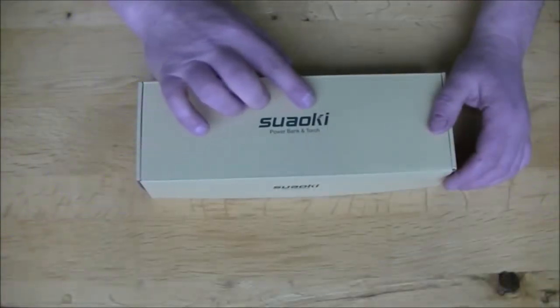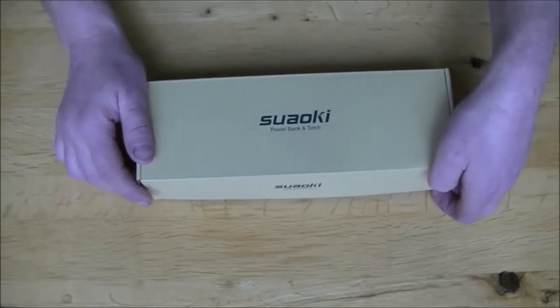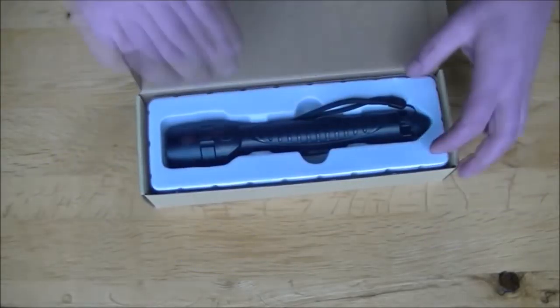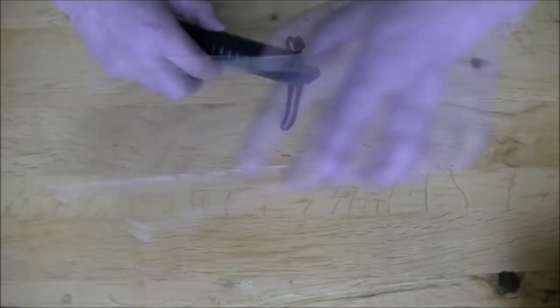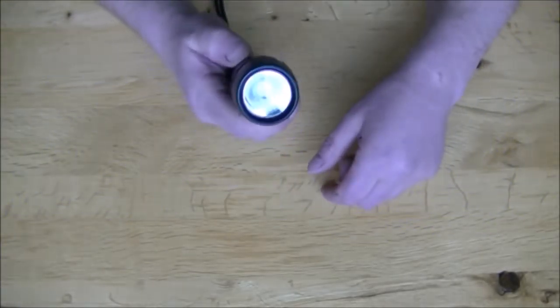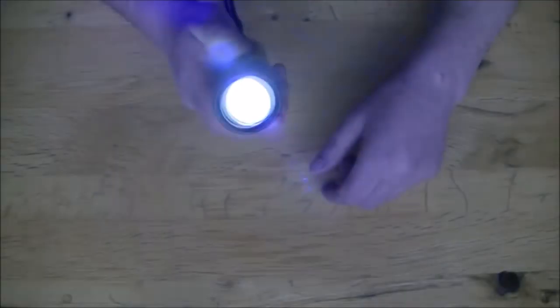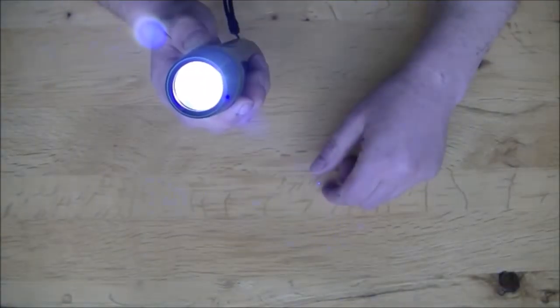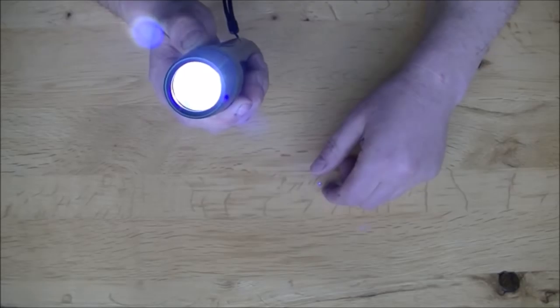Okay, here we go. Swaoki power bank and torch. All right, now that looks just like a normal flashlight, pretty bright, got three different modes of intensity for the light to a maximum of 240 lumens. Yeah, unfortunately it's very difficult to see on a night because my camera doesn't pick up the light the best.